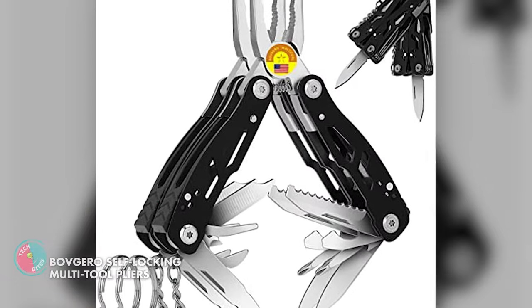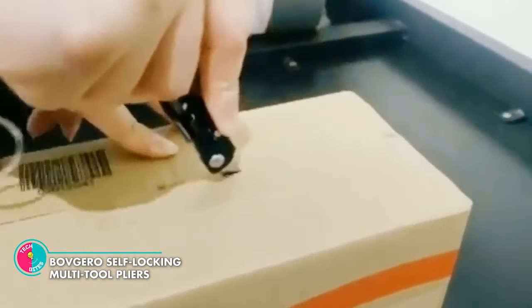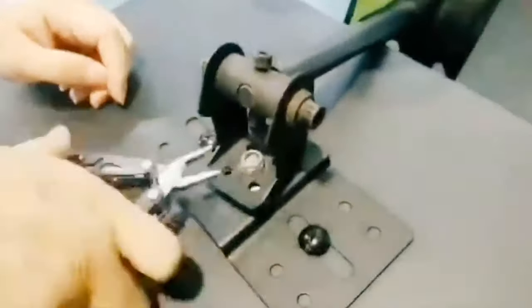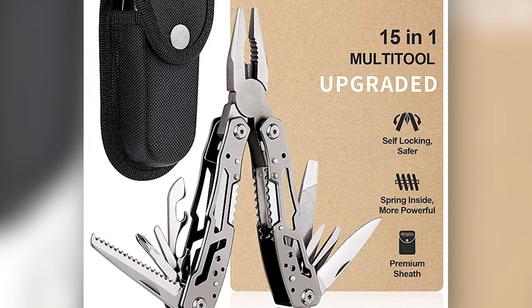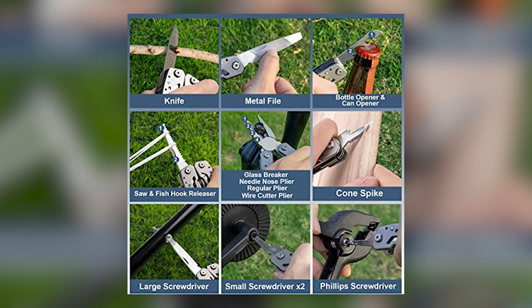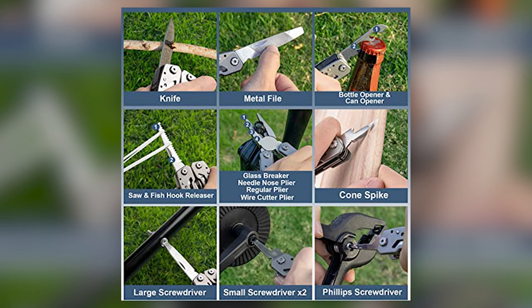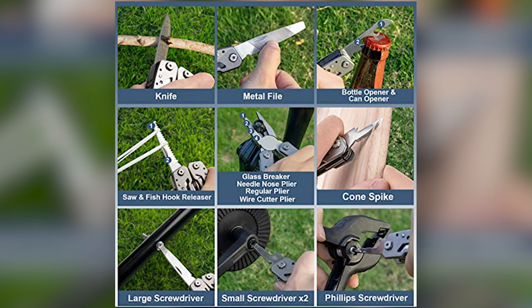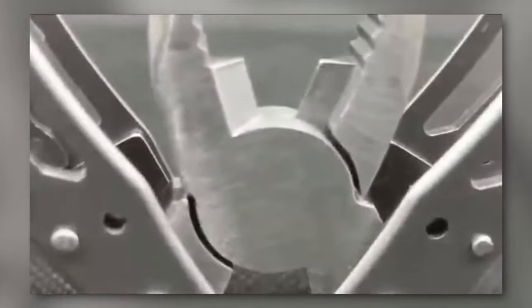Bovgero Self-Locking Multi-Tool Pliers. This multi-tool is safer, more portable, and can lock itself. It contains 15 multi-tools, including a knife, a spring-loaded needle-nose plier, a regular plier, a wire cutters plier, a glass breaker, a fish scaler saw, a fish hook releaser, a bottle opener, a can opener, a cone spike, a Phillips screwdriver, a large slotted screwdriver, a middle-sized slotted screwdriver, a small slotted screwdriver, a metal file, and a locking hand.